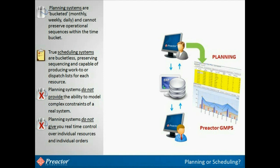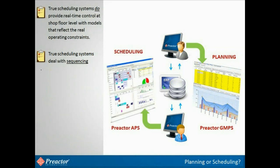Planning systems typically sit above ERP, taking orders, stock and forecast demand, and working out what should be made in each bucket of time. We call this MPS, Master Production Schedule. Scheduling systems take information from ERP and carry out the detailed scheduling process, taking into account the sequencing required based on the rules and objectives you give it.